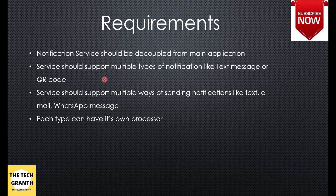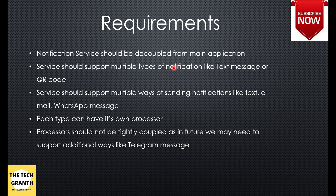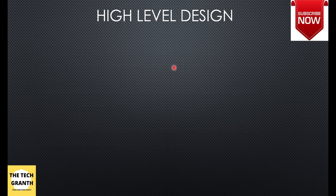Each type can have its own processor so they all have their own single responsibility. Finally, the processors should not be tightly coupled because in future we may want to add a new way of sending notifications, like Telegram instead of WhatsApp, or add a new notification type such as JSON or XML for internal applications. Your application should be able to handle that kind of scenario.